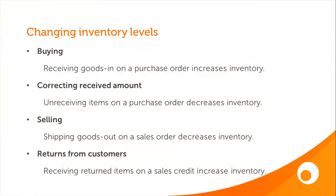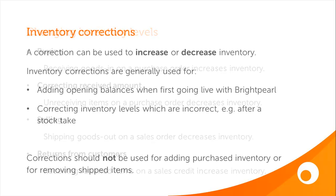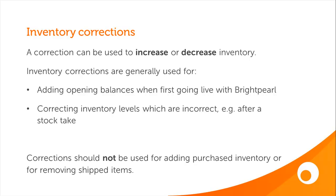So far we've seen inventory levels are changed by buying inventory — when it's received against a purchase order it increases inventory. Correcting the received amount: un-receiving inventory on a purchase order where the incorrect amount was received in error decreases inventory. Selling inventory: when an item is sold and shipped to a customer it decreases the inventory levels. And then receiving items back in on a sales credit when a customer has returned an item increases stock. But inventory can also be adjusted using inventory corrections, which can be done to increase or decrease the in stock inventory level by the desired quantity.